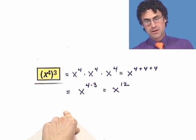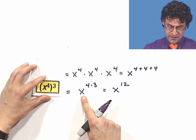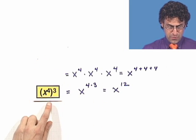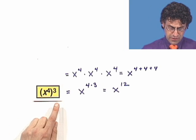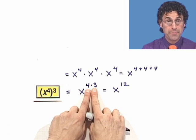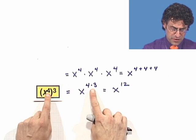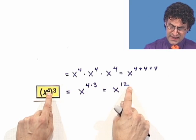Well, the x to the twelfth is the answer, but I'm more interested in this answer here because I see what to do when I have a power raised to a power. What do I do? I multiply the powers together. So I multiply the four by the three and I get 12.